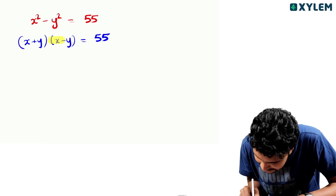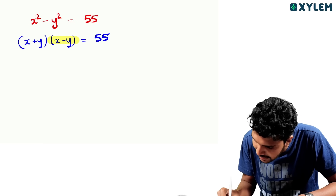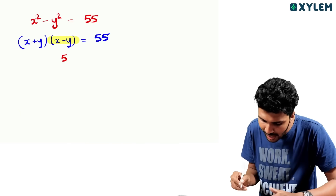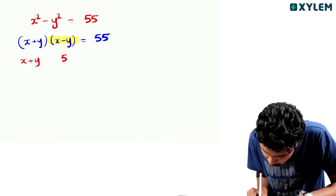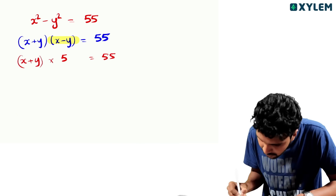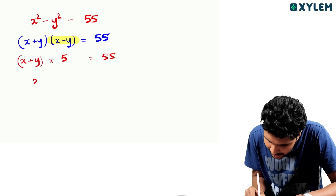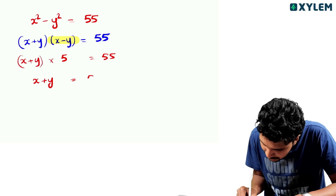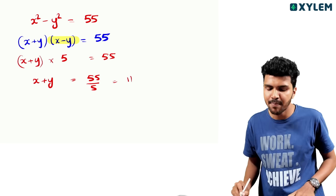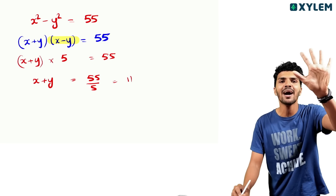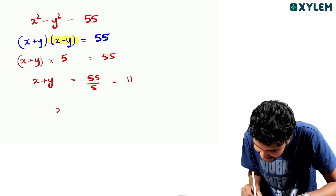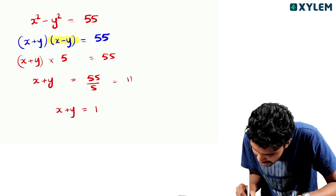Now I will show you what x minus y is. x minus y is equal to 5. So x plus y equals 95 divided by 5, which gives x plus y is equal to 11.